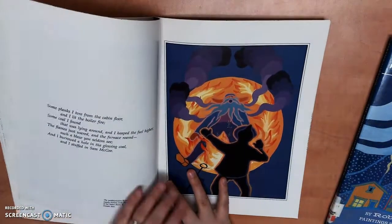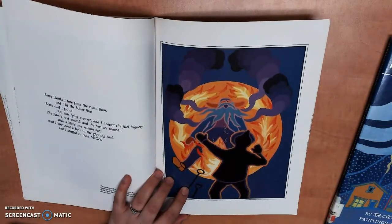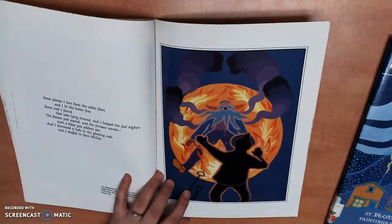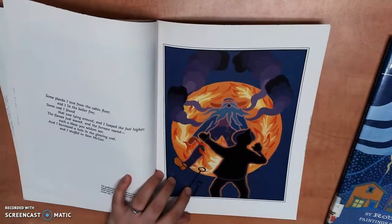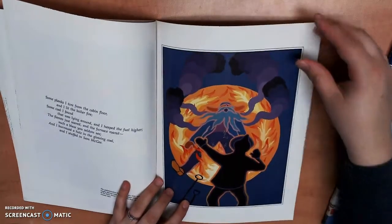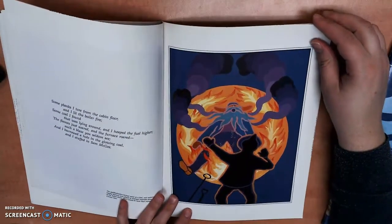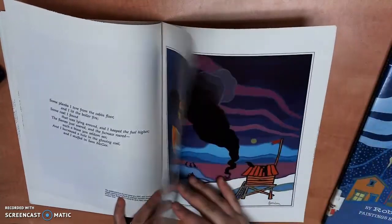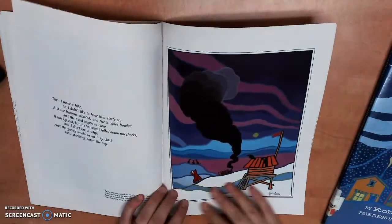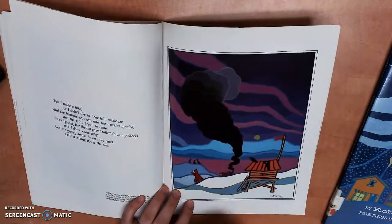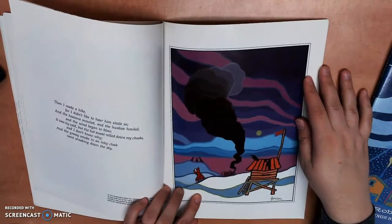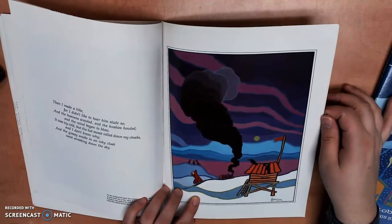So Ted Harrison, he lived in Canada for part of his life. He also lived in some other areas. Oh, this is another great one. Look at that sky. That's amazing. So he lived in the Yukon.